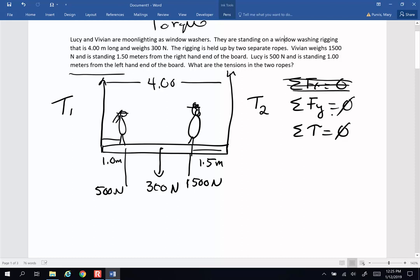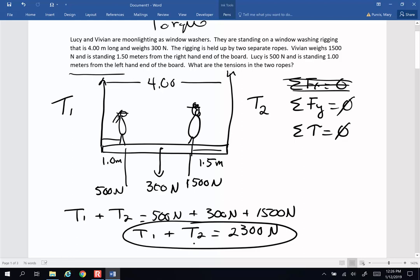My forces up and down, I have two up forces, the tension in this rope and the tension in that rope, and they are going to equal all of those. So I can go ahead and make an equation. Tension one plus tension two is going to be equal to 500 newtons plus 300 newtons plus 1,500 newtons. So T1 plus T2 are going to be equivalent to 2,300 newtons. Now I have one equation, two unknowns. I can't solve it yet.